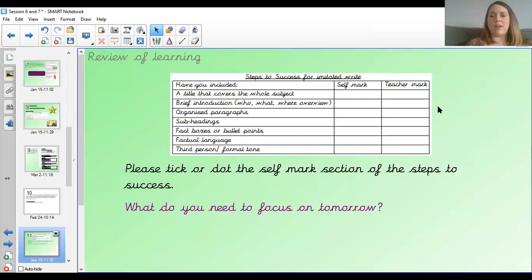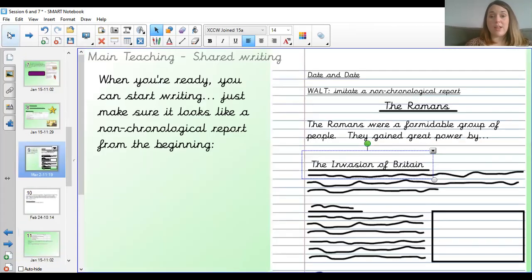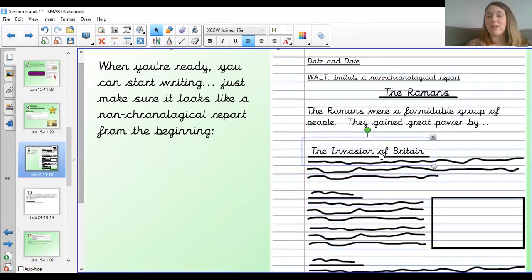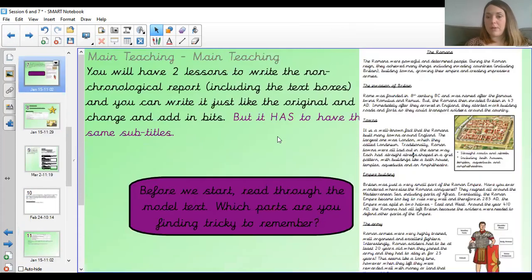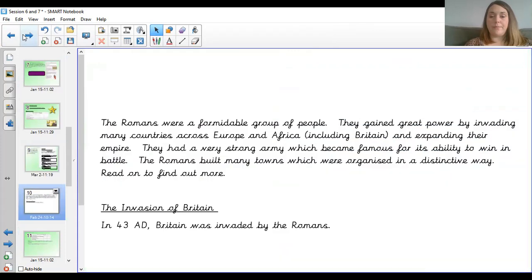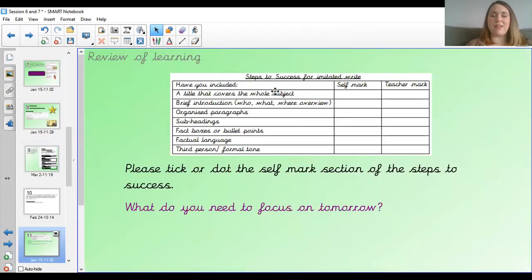So, what you need to do now is get started. You've got two lessons to write this. And my video tomorrow will be a lot shorter than my video today. So today, you need to get up to at least the end of the invasion of Britain. Ideally, you will have got up to the end of the town section today. That will leave you the second half to do tomorrow. But if you only get up to the invasion of Britain paragraph today, don't worry too much because, like I said, my video tomorrow is much shorter. When you've finished your work today, year four, you need to have a look at your steps to success. And you need to tick the ones that you think you've done and put a dot next to the ones that you haven't done yet. Those ones will be the ones you need to focus on tomorrow. Good luck with your writing. Please send it through so we can see how you've got on. And I will see you soon. Bye.